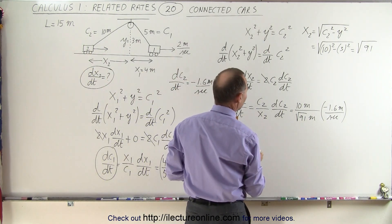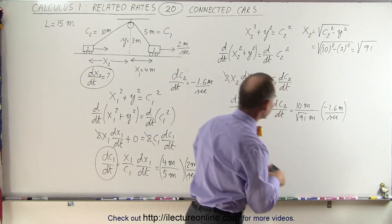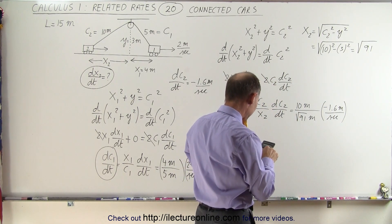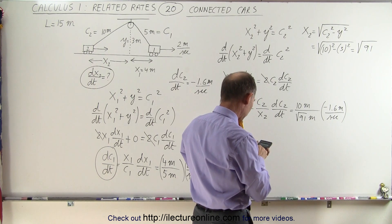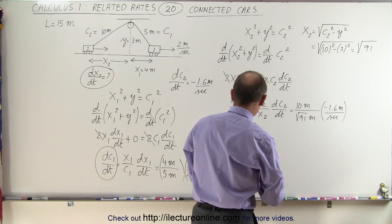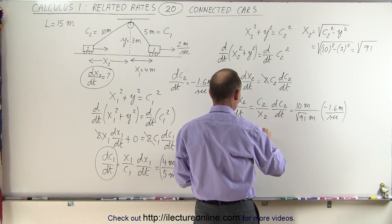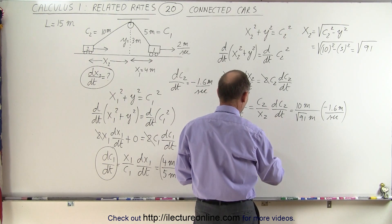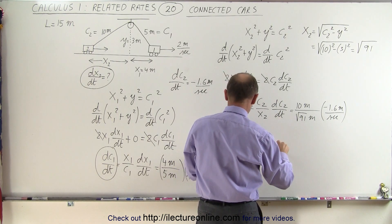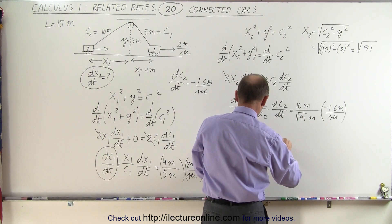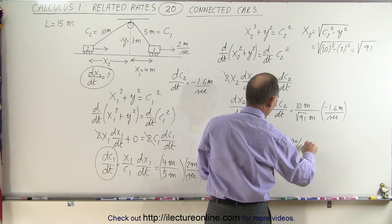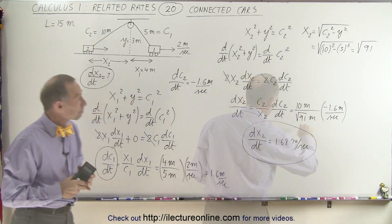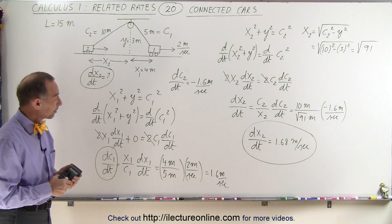So now when we plug in the numbers, well, all we need now is a calculator. 10 divided by the square root of 91, times 1.6. And it turns out that the rate of change for the second car with respect to time is going to be a positive 1.68 meters per second. And that's how we do a problem like that.